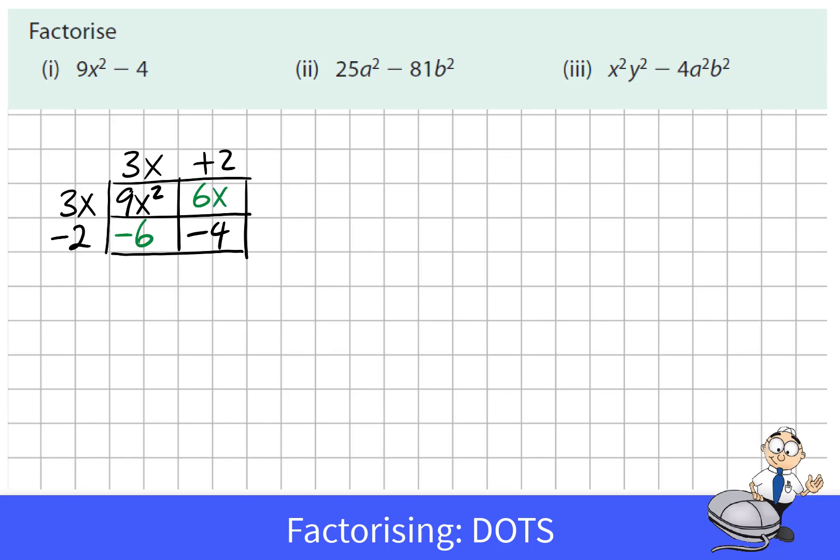We see that if we multiply 3x by 2 and negative 2 by 3x that this other diagonal adds up to 0. So 3x plus 2 multiplied by 3x minus 2 would be equal to 9x squared take away 4.